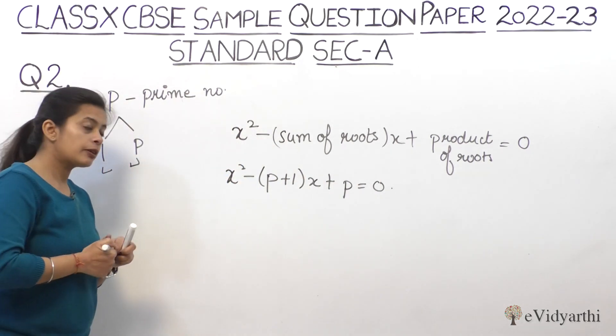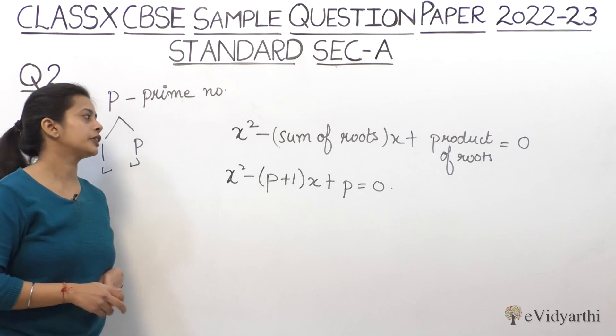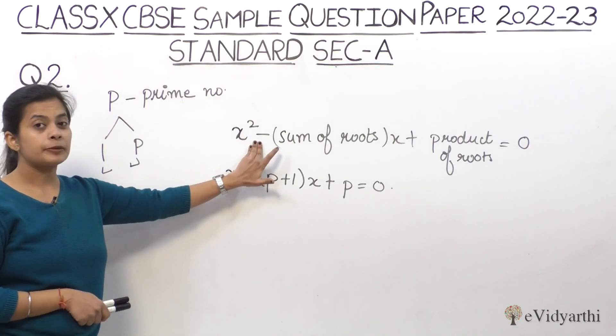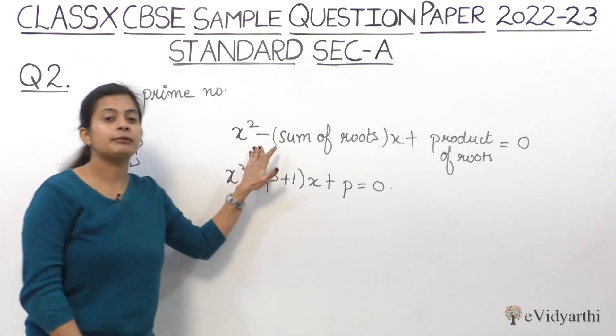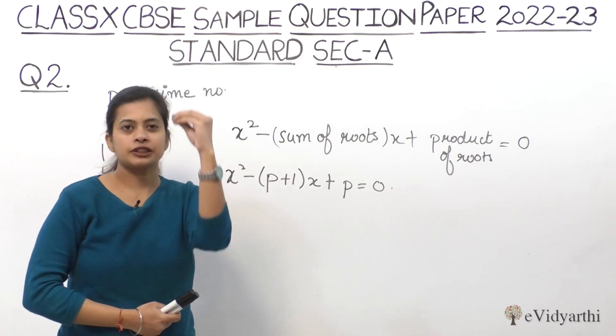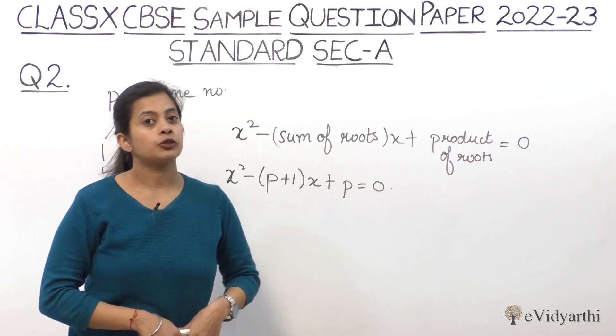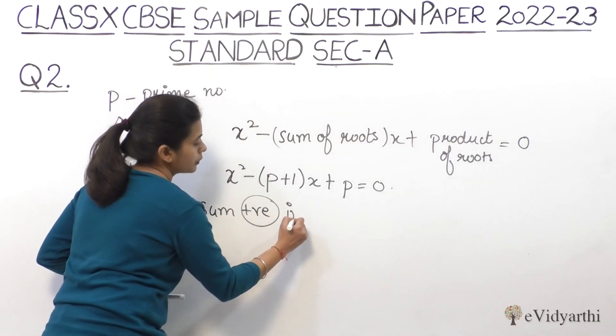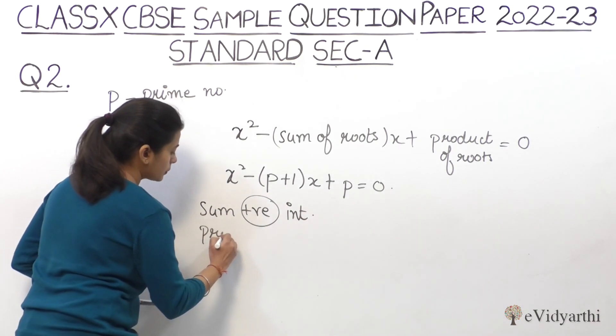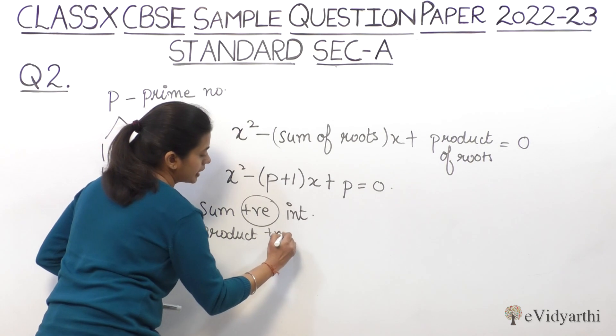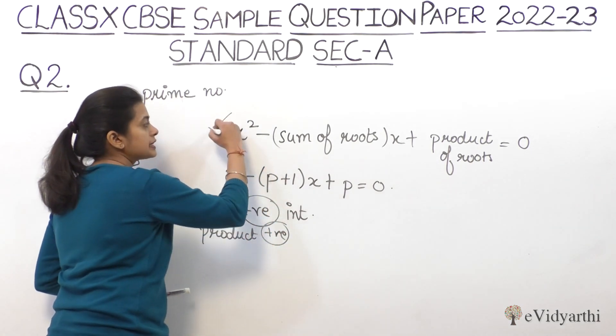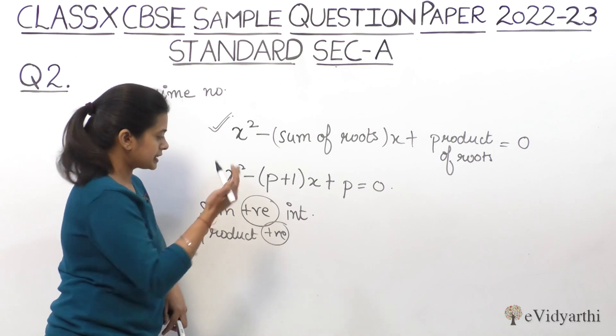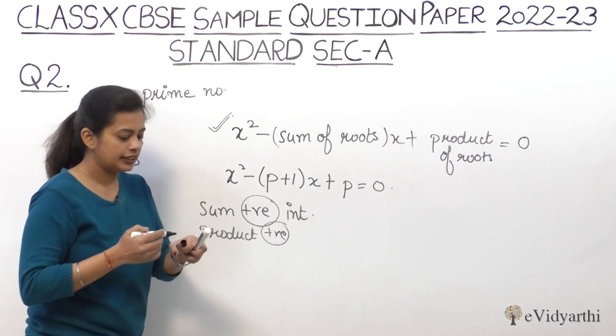I'll give you a little hint about the negative sign. When the sum is a positive integer and the product is also a positive number, the quadratic equation always becomes this way, where the second term has a minus sign. So that's it, you have the answer.